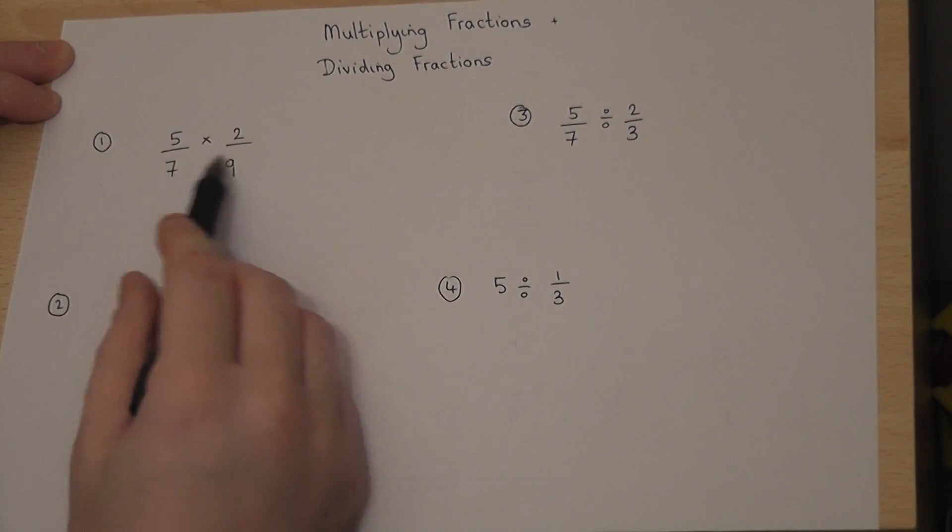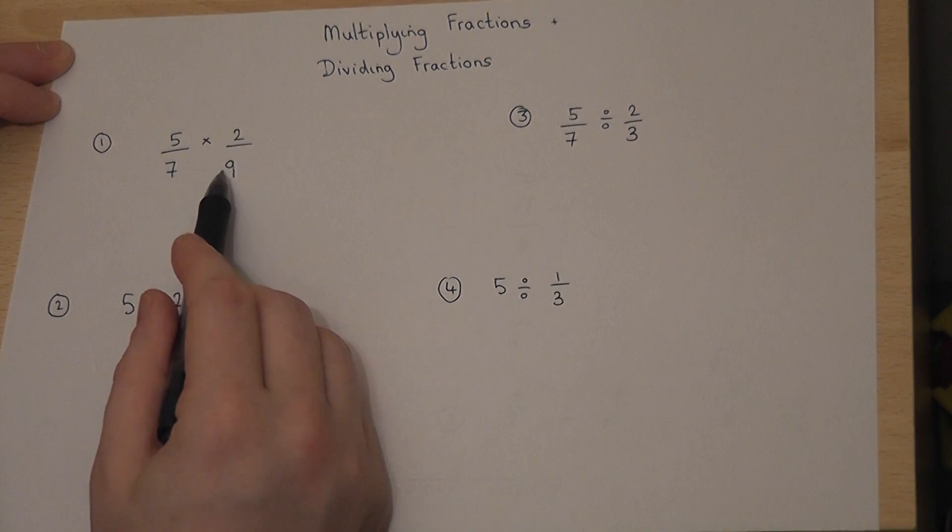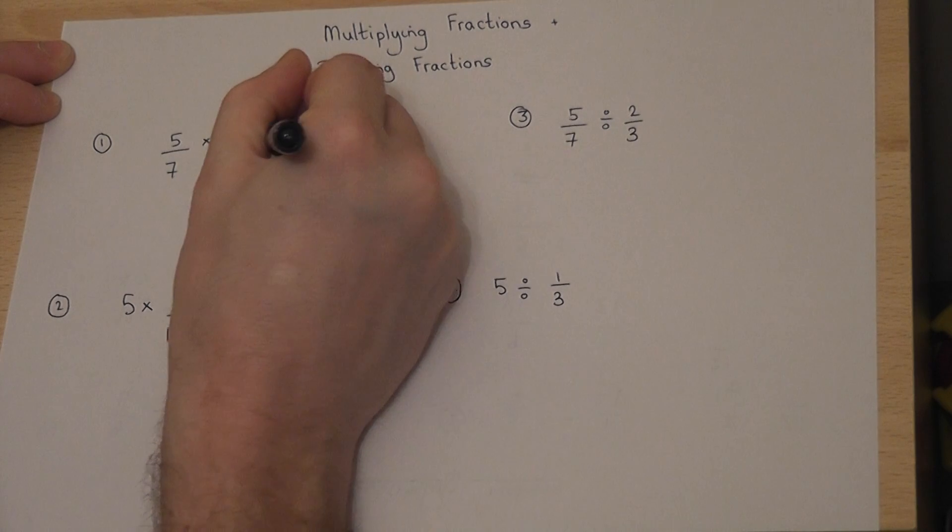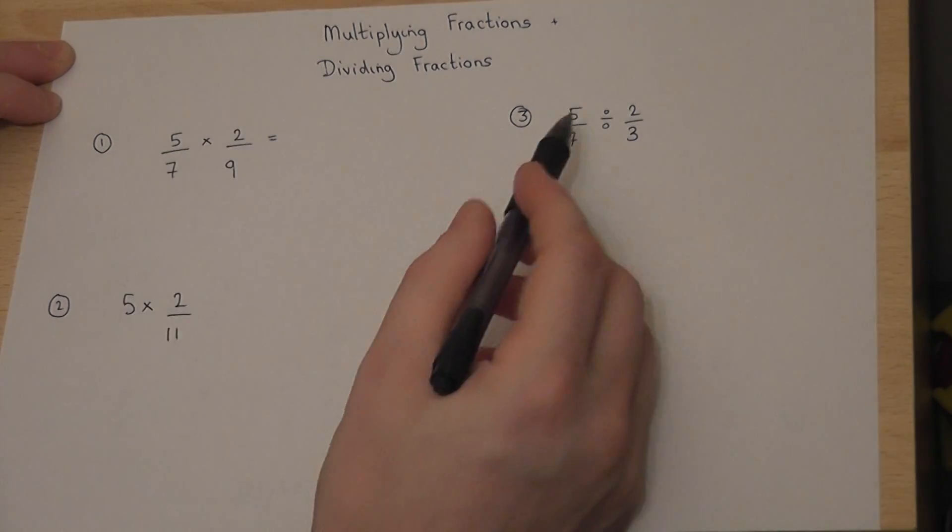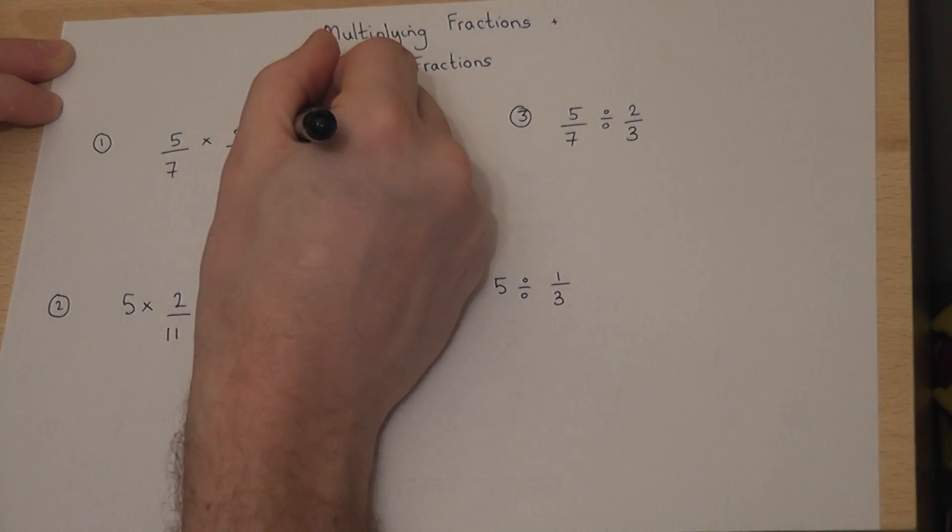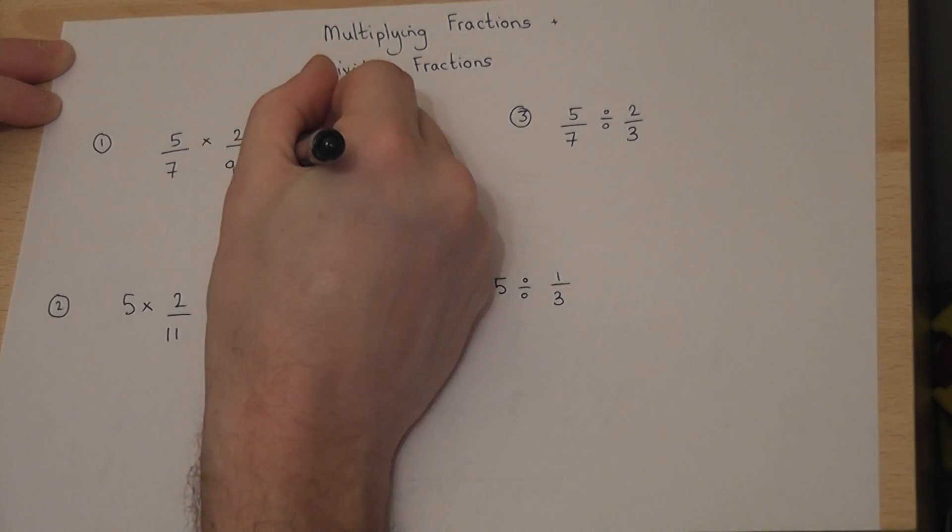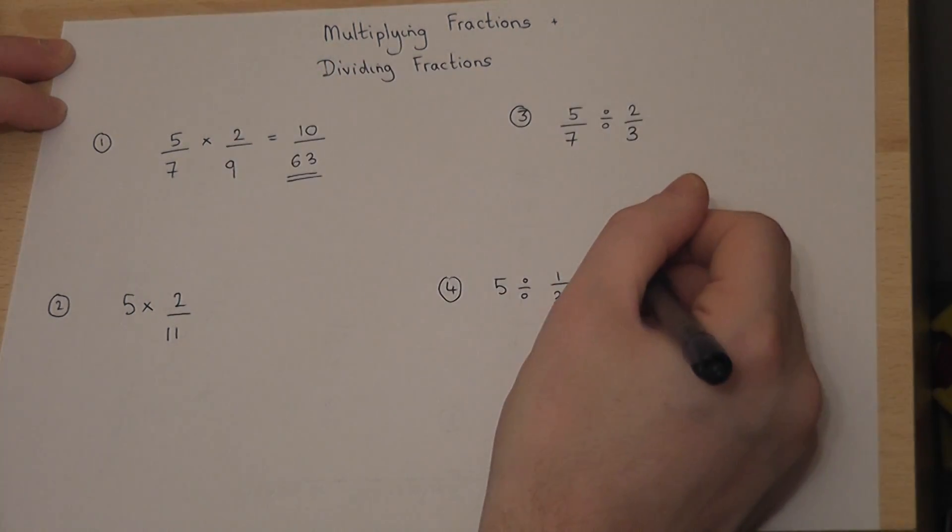When we times fractions together, it doesn't matter about having the same denominator. All we do is we times the two top numbers, 5 times 2 is 10, and times the two bottom numbers, 7 times 9 is 63. And that really is the answer.